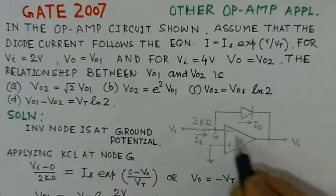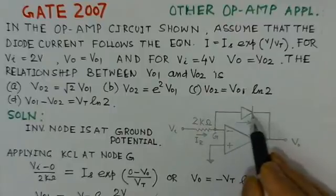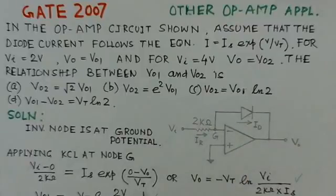The diode voltage here is 0 volts minus V0. This other end of the diode is at V0, so this is 0 minus V0, the voltage across the diode divided by Vt. This could be written as V0 is equal to minus Vt ln Vi upon 2 kilohms times Is.